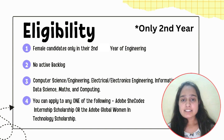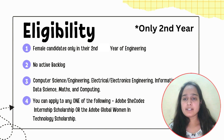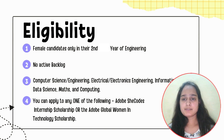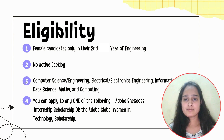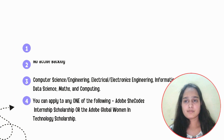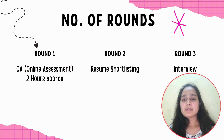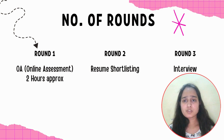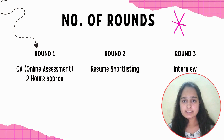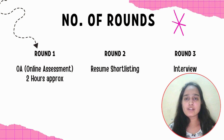There will be three rounds. Round one is the Online Assessment (OA), which is a two-hour test. Round two is resume shortlisting, and round three is the interview.